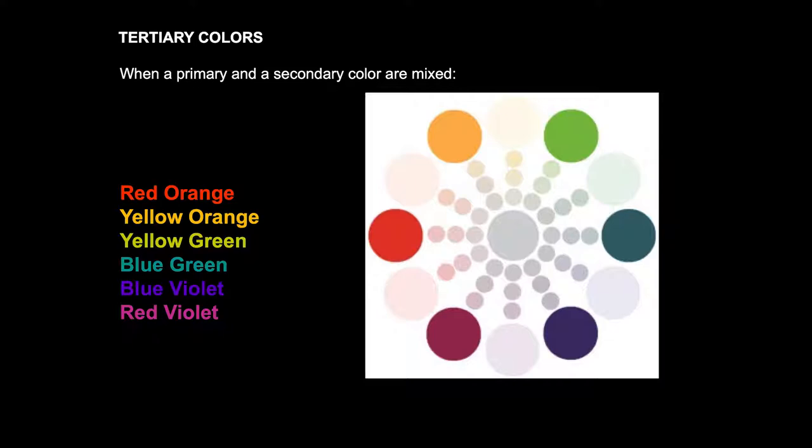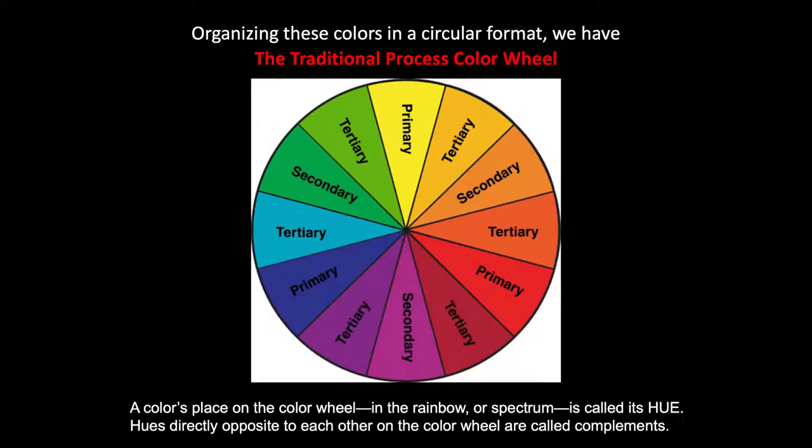When the primaries and secondaries are mixed, we get tertiary colors such as red-orange, yellow-orange, yellow-green, etc. As you can see, the variety of hues between any two colors is infinite. We can organize these colors, and typically they are organized in a circular format that we know as the color wheel.